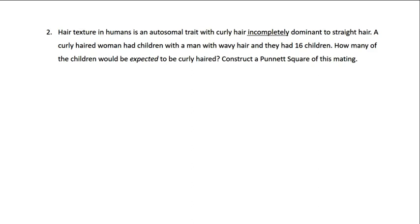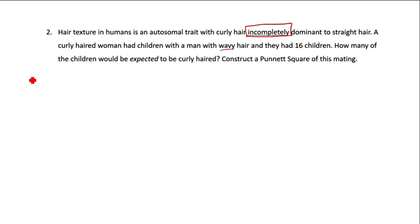It's important to actually read what the question is asking and not automatically just do the phenotypic and genotypic ratio. Here is another question — when we read it we'll see it's not actually asking for that. Hair texture in humans is an autosomal trait with curly hair incompletely dominant to straight hair. This tells us we're dealing with incomplete dominance, where heterozygous individuals have an intermediate phenotype — in this case, wavy hair, something in between curly and straight.